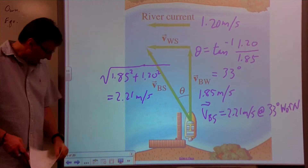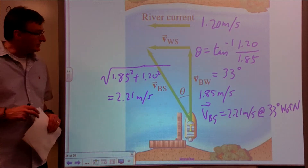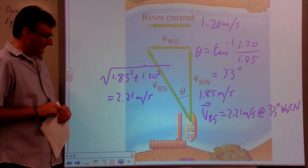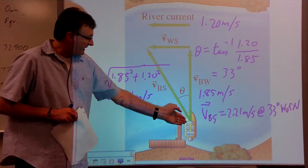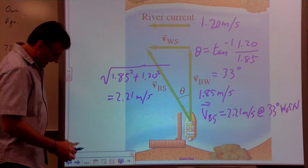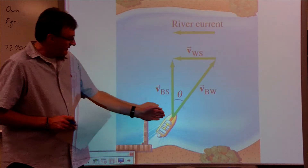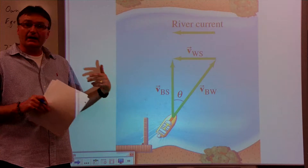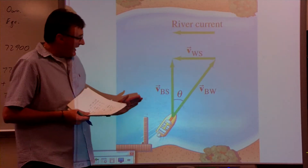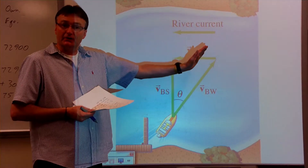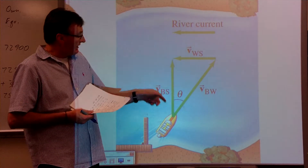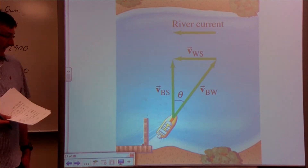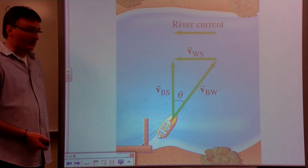Now let's do this a little differently. What if we wanted the boat's motion vector to be directly across the river? In the previous case the boat was headed straight across but its resultant was certainly not directly across. Your intuition would say you have to aim the heading somewhat into the current if you want your motion to be directly across the river. That changes the trigonometry a bit, but you're still using basic trig ratios and the Pythagorean theorem.